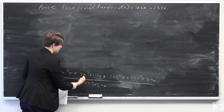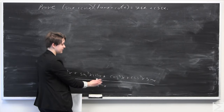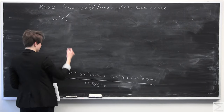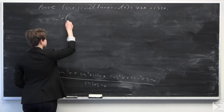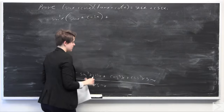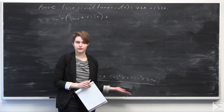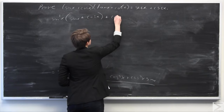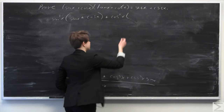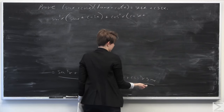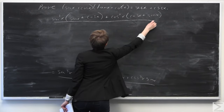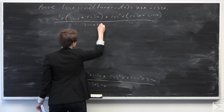Now I'm going to factor out a sine squared term from the first two terms. Factoring out sine squared of x leaves sine of x plus cosine x. Then for the second group, we factor out a cosine squared term. Factoring out cosine squared of x from cosine cubed of x leaves cosine x, and from cosine squared x times sine of x leaves sine of x. All of this remains over sine of x times cosine of x.